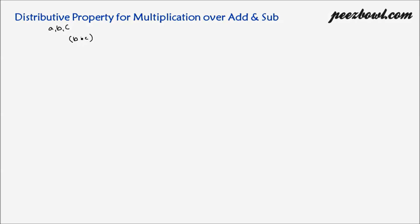Suppose we are adding two integers b and c and we are multiplying them by a. In this case, each integer inside the parenthesis, b and c, will be multiplied by the integer outside the parenthesis. So a and b will be multiplied together, then a and c will be multiplied together, and then we have a plus sign coming in between. After that, the resulting products are added together.